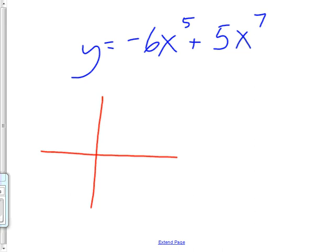Everybody try this one, please: negative 6x to the fifth plus 5x to the seventh. I don't expect you to know exactly what this function is doing, but I expect you to know how it ends and how it begins. You have been misled. Look at the equation more carefully.